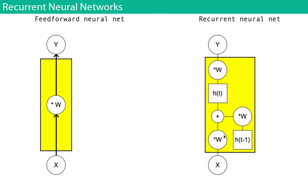In the simplest formulation, h(t) times a weight matrix W gives y — this replaces the final mapping. But h(t) is a function of both the current input and the previous hidden state. So we input x, calculate the hidden state, calculate y, and that hidden state gets passed to the next time step where it becomes the previous state. H(t) is constantly evolving as a function of all previous hidden states.